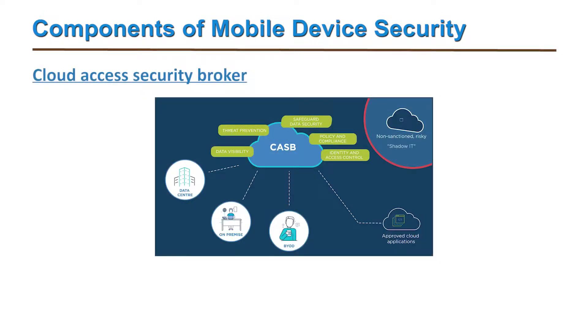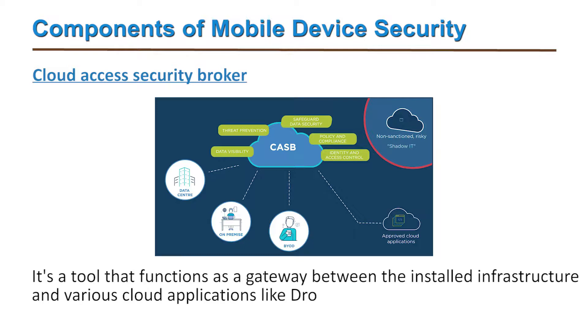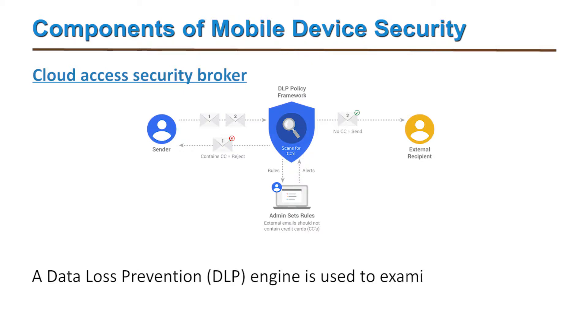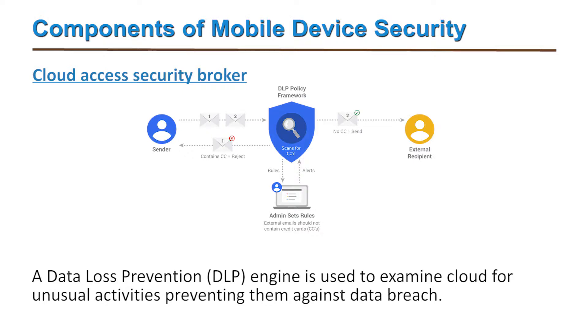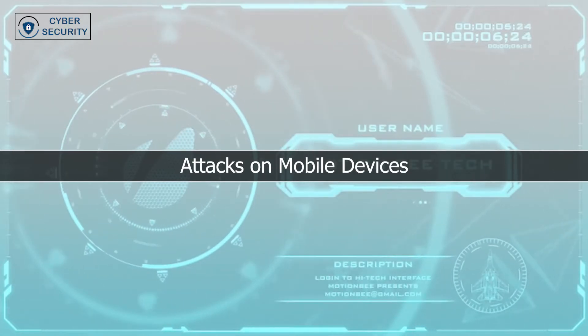Finally, the fifth component is the cloud access security broker, or CASB. It is a tool that functions as a gateway between the installed infrastructure and various cloud applications like Dropbox. A data loss prevention (DLP) engine is used to examine the cloud for unusual activities and prevent data breaches.